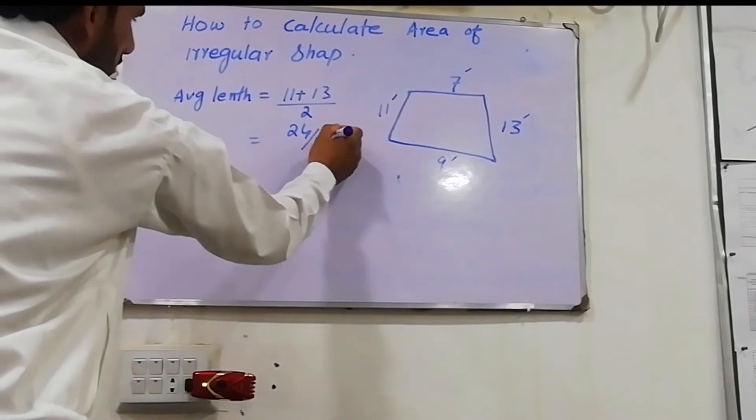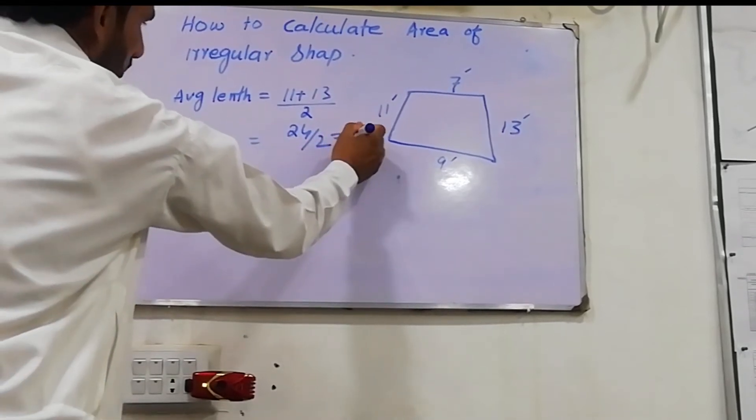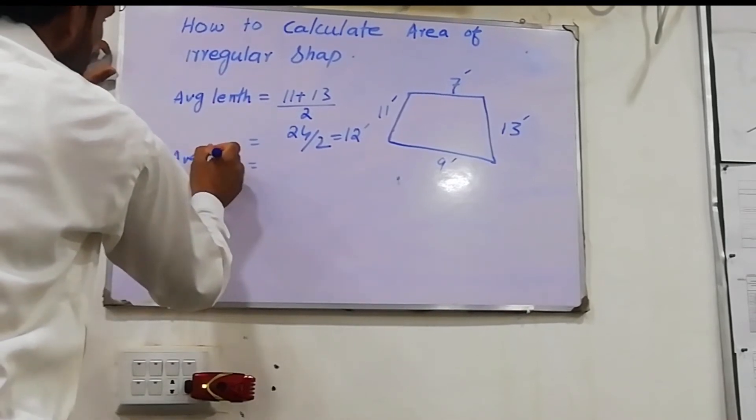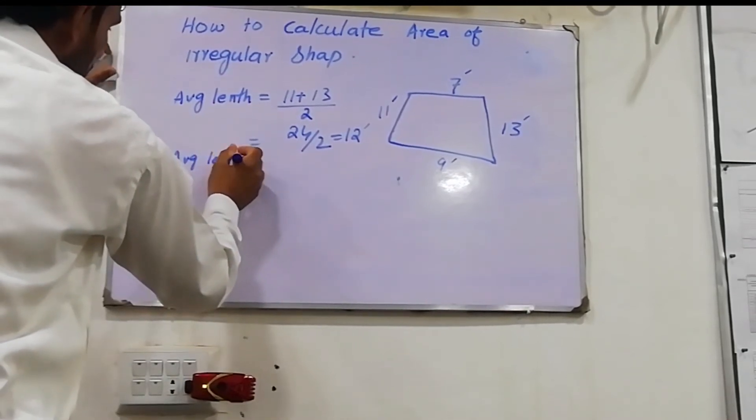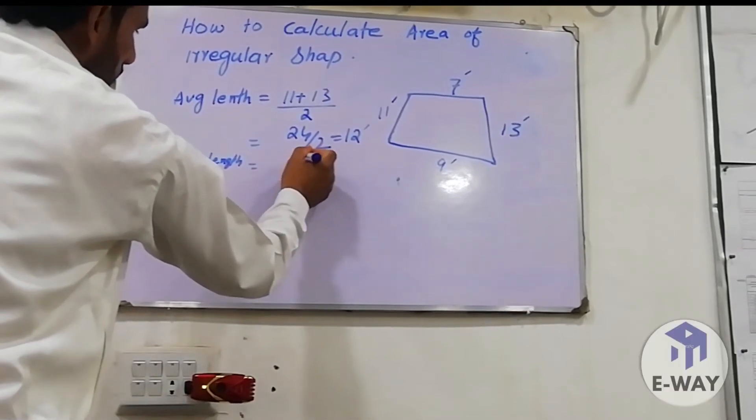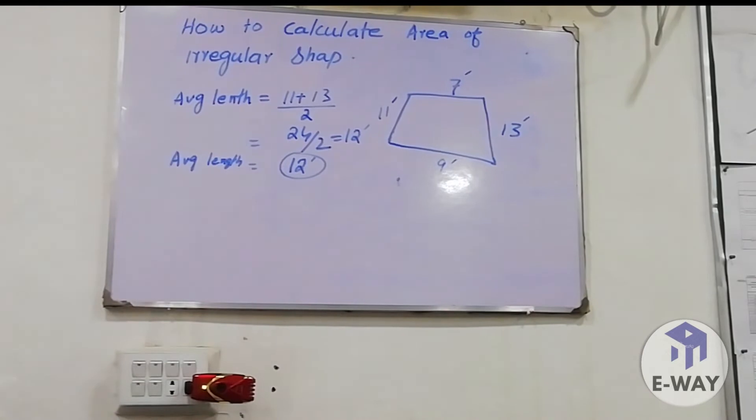24 divided by 2 equals 12. Average length of the other side is 12 feet.